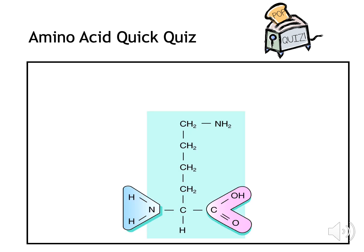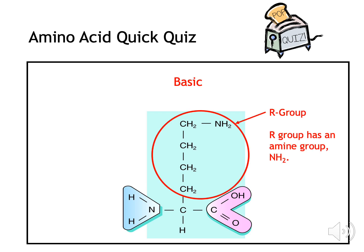Can you identify which type of amino acid this is? Well done if you got this correct — this is a basic amino acid. Even though there are other carbons and hydrogens, the R-group has an amine group within it.